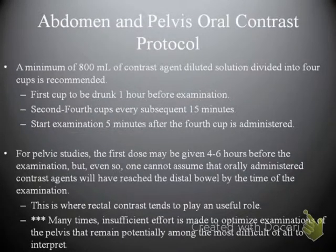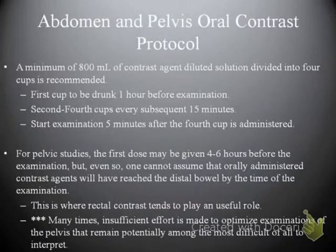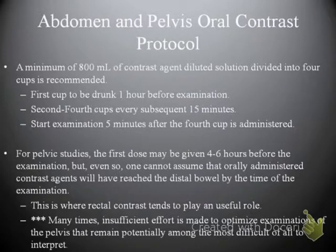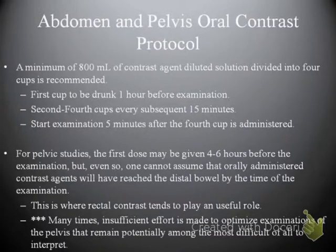For CT of the abdomen and pelvis, a minimum of 800 mL of diluted contrast divided into four cups is recommended. The first cup is drunk one hour before the exam; subsequent cups are given every 15 minutes after that, at 45, 30, and 15 minutes before. The examination starts five minutes after the fourth cup. For pelvic studies, the first dose may be given four to six hours before the exam, though one cannot assume oral contrast will have reached the distal bowel by examination time.